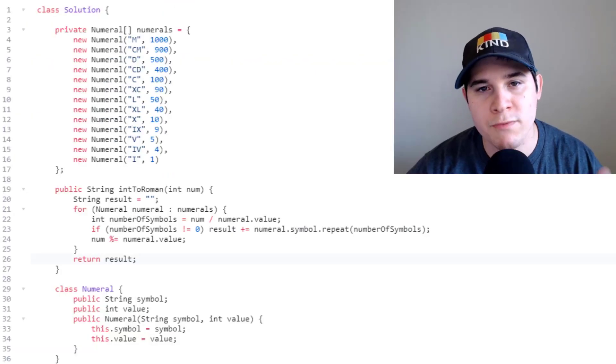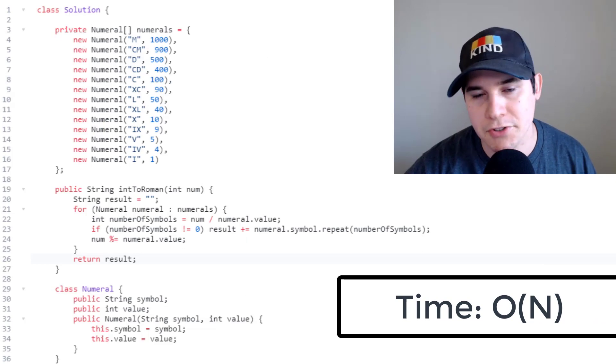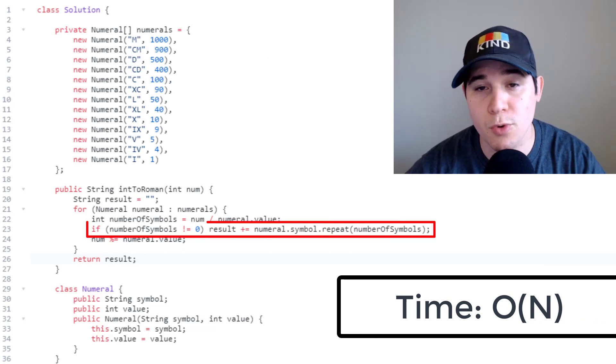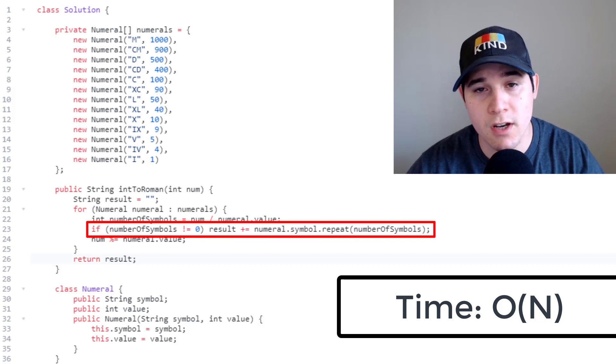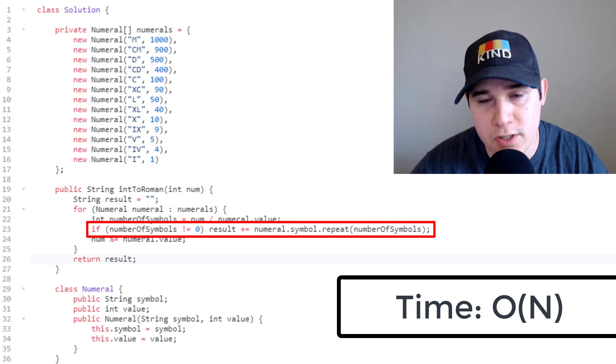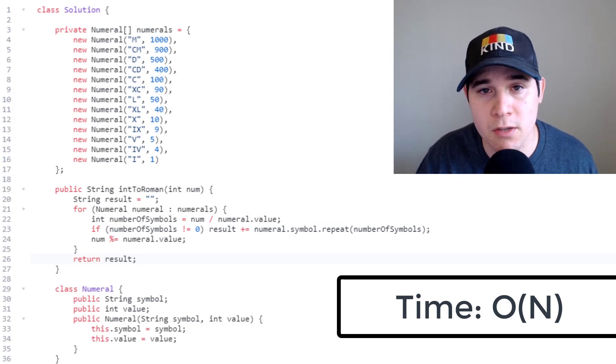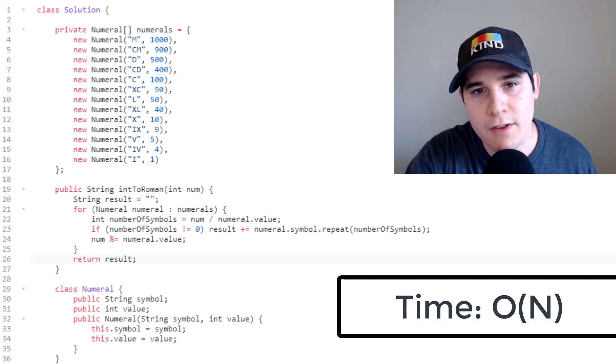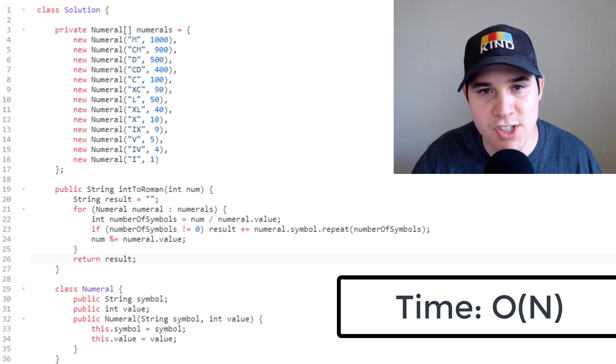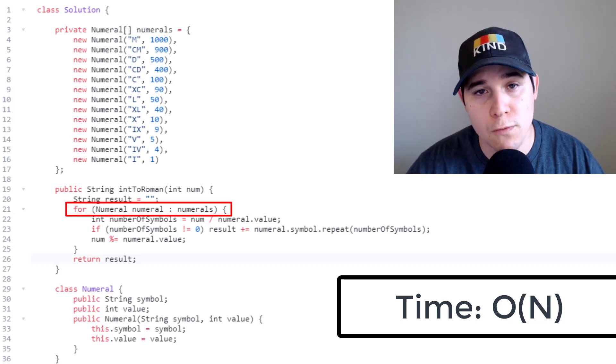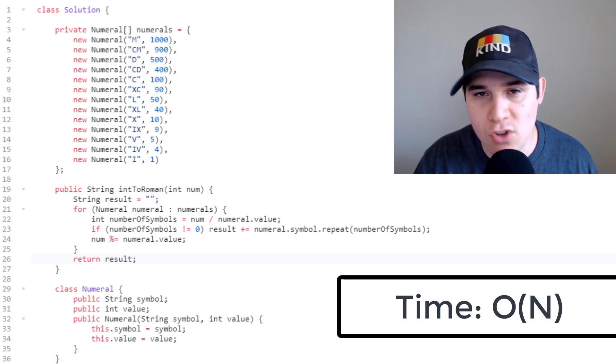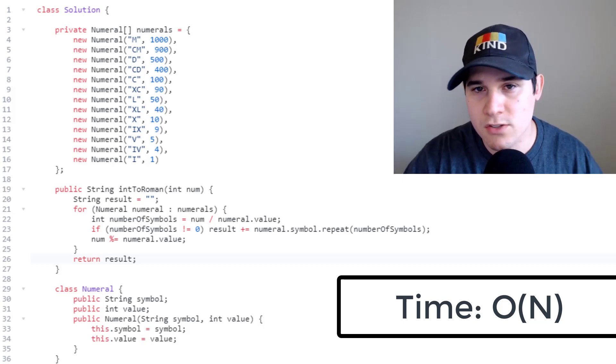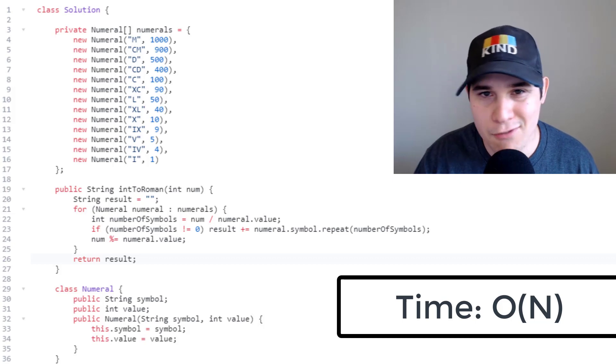So our time complexity is going to be big O of n where n is the number of roman numeral characters we have in our result. On line 23 we use the repeat function which has to generate the number of symbols that we provide to it. So under the hood the repeat function is actually running in big O of n time where n is the number that we supply to it. So by the end of our conversion we will have looped over every single character in order to generate it. And keep in mind the for loop that we have that loops over all of our numerals does not contribute to our time complexity because the numerals array is always going to be the same size.